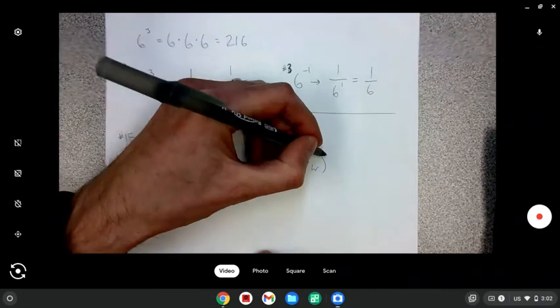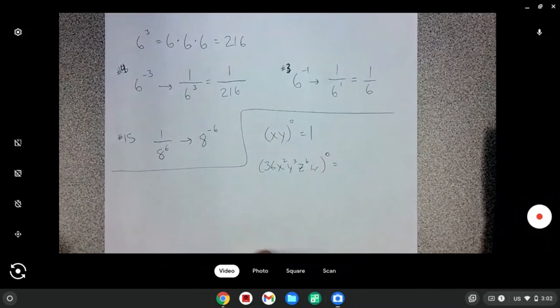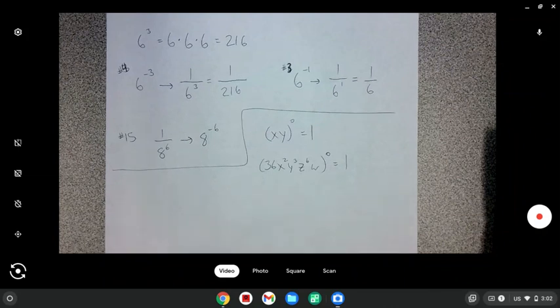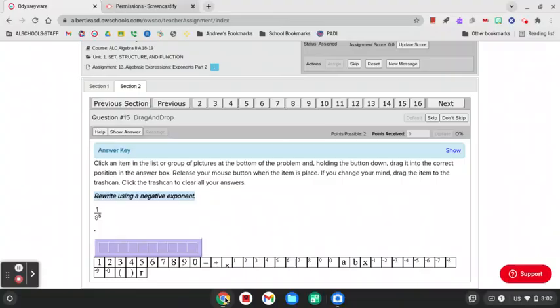If it was that to the zero power, it equals one. To the zero power, one. There you go. Let me know if you would like to see more examples of how the negative exponents work.